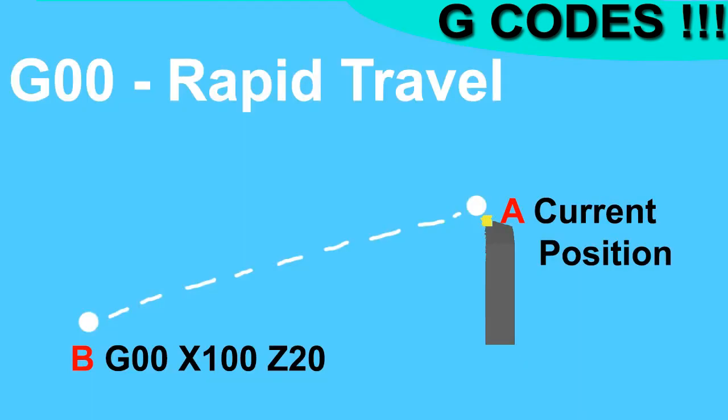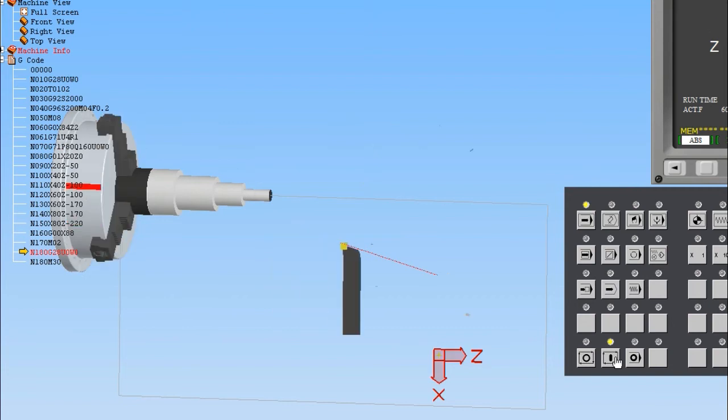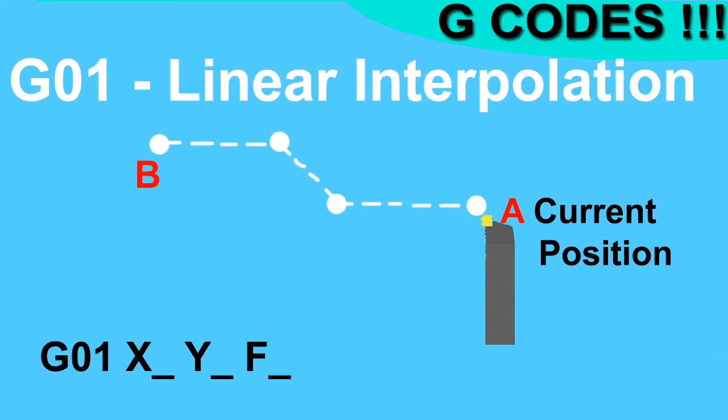G00 is used for rapid travel. This code is used when the tool doesn't have to do cutting but we want to change its position from point A to point B at maximum speed. It is normally used when going home for a tool change and returning with a new tool. Remember, in this mode you can cause the most damage to the CNC if not programmed correctly. Example: G00 X100 Z20 will move the tool from its current position to coordinate X100 Z20 at maximum speed.